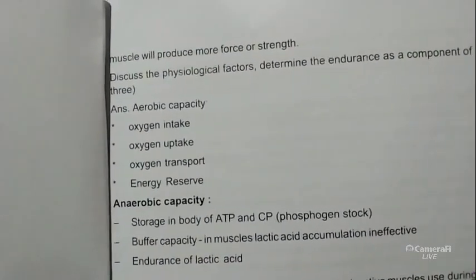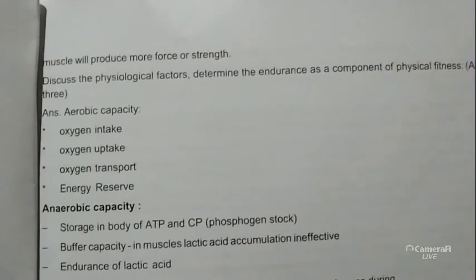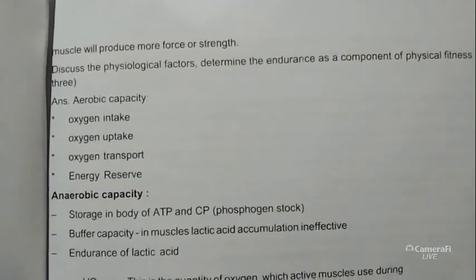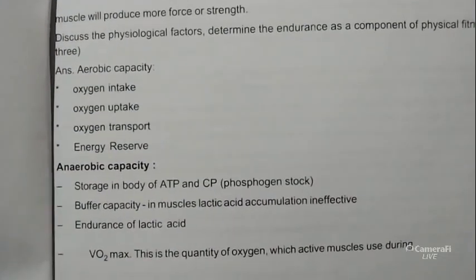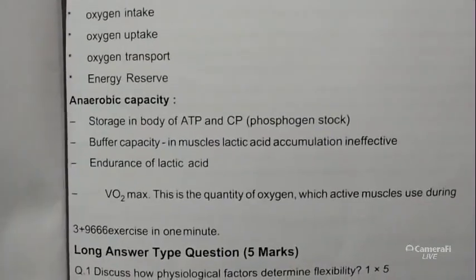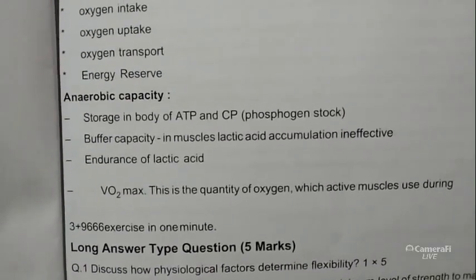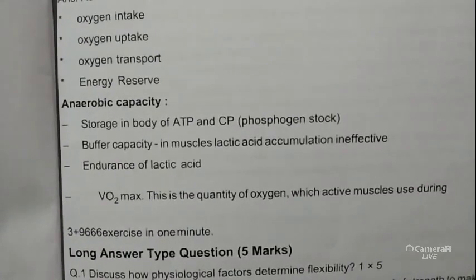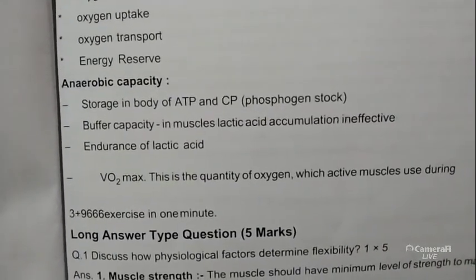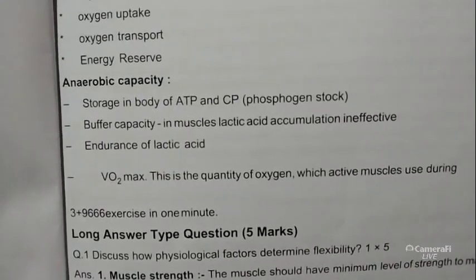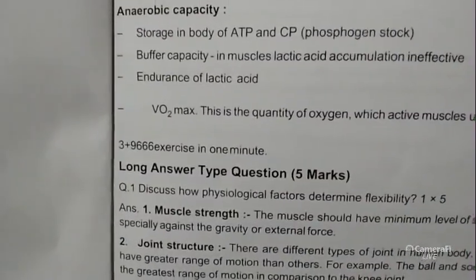Discuss the physiological factors that determine endurance as a component of physical fitness — any three. For aerobic capacity: this includes oxygen uptake, oxygen transport, energy reserves, ATP and CP storage in the body, buffer capacity in muscles, lactic acid accumulation, and VO2 max — the quantity of oxygen which active muscles use during exercise in one minute.